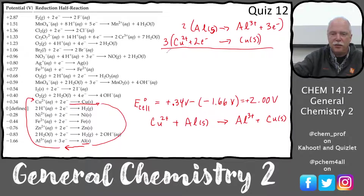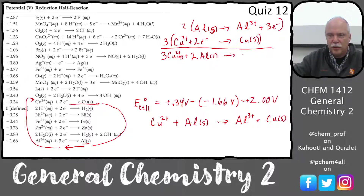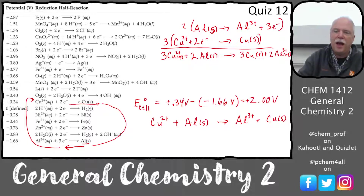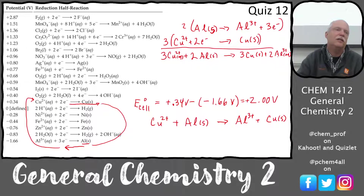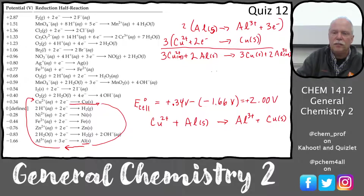When we match all of these down, we have 3 Cu²⁺ (aqueous) plus 2 Al solid going to products. Now it's balanced — I have 6 pluses on the left and 6 pluses on the right, so we're all good. That's my balanced reaction.